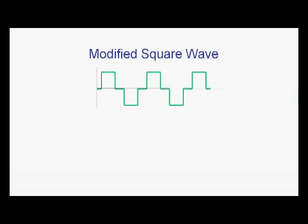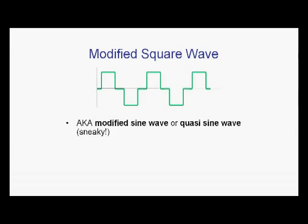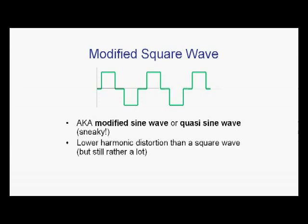Much less rare are inverters that produce what is known as a modified square wave. You'll also see this described as a modified sine wave or a quasi-sine wave. This is a little bit sneaky because manufacturers know that many people know that a sine wave is good and a square wave is bad, so they're really trying to come up with names that associate this with a sine wave rather than a square wave - and it obviously has a lot more in common with a square wave than a sine wave. It does have lower harmonic distortion than a square wave, and there are various smoothing circuits that can be used to smooth it out and make it look kind of like a nice smooth sine wave. But it still has rather a lot of harmonic distortion. Because it is somewhere between pure square wave and pure sine wave, it can be used for a wider range of appliances - though I probably wouldn't feed that to my high-end stereo.